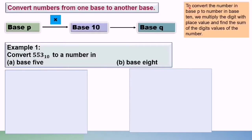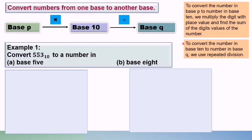To convert a number in base P to a number in base 10, we multiply the digit with the base value and find the sum of the digit values of the number. Whereas to convert a number in base 10 to a number in base Q, we use repeated division.